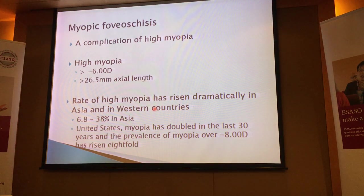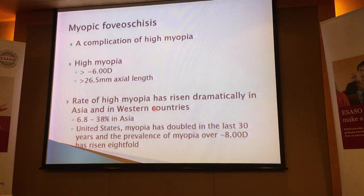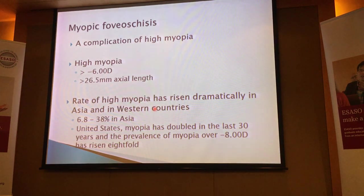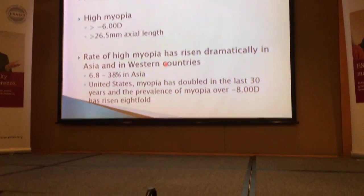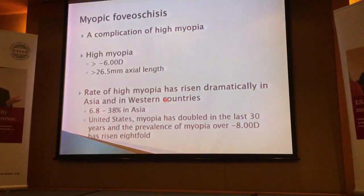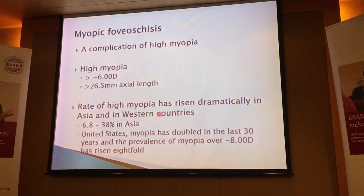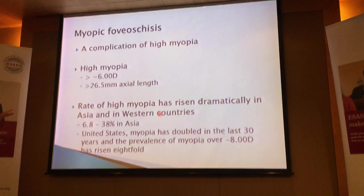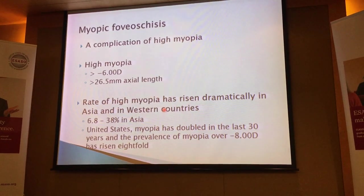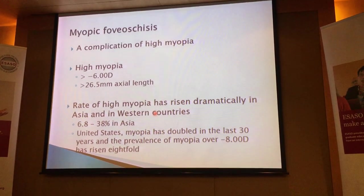As we all know, it's a complication of high myopia. High myopia is now defined as more than minus 6 diopters, or an axial length of more than 26.5mm. It is important because the rate of high myopia is actually rising quite dramatically, not just in Asia, but also in Western countries as well.